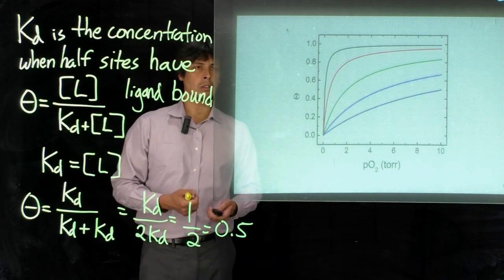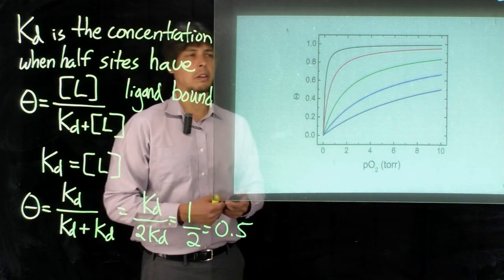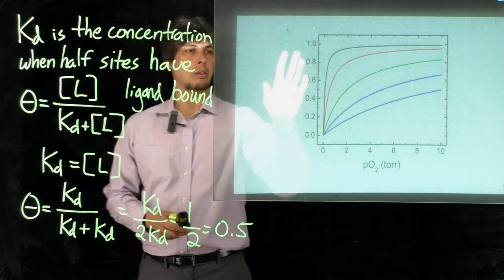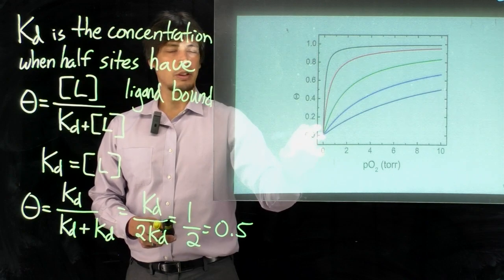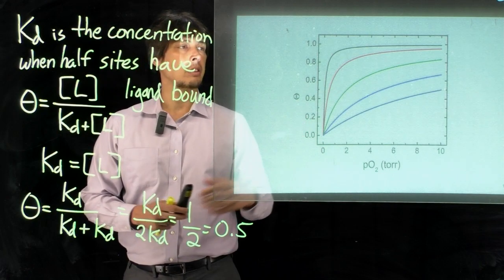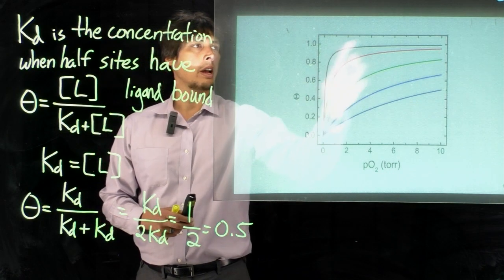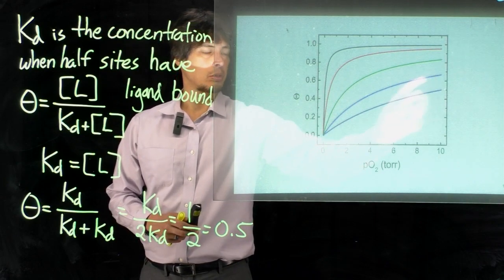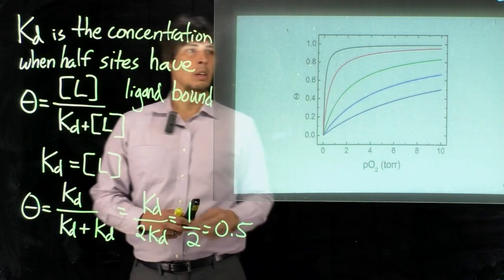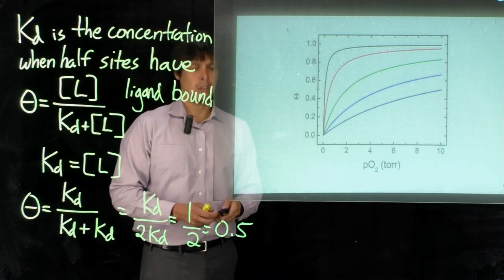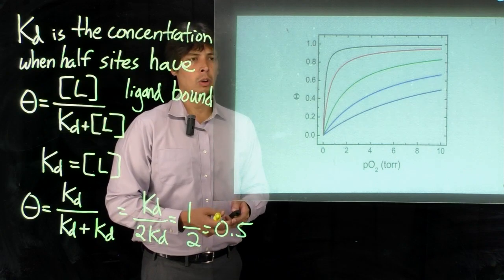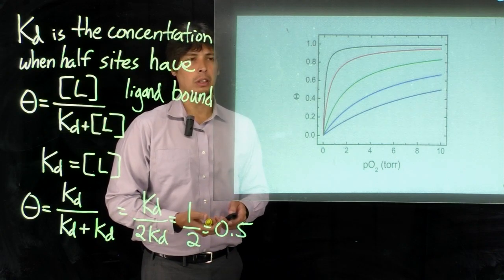Now this is useful because we can also look at several binding curves by inspection. So let's say we have several binding curves shown here on the right and these are different ligands that might bind to our protein. So there's a black trace shown here, a red trace, a green trace, a blue trace, and then a dark blue trace. So there are five different curves here. So we can just look at these and find out what the relative affinities for all these ligands are.